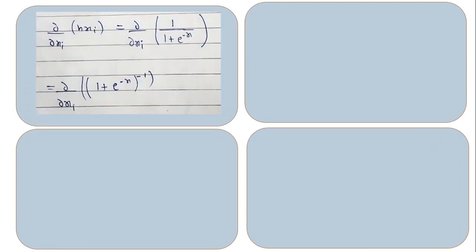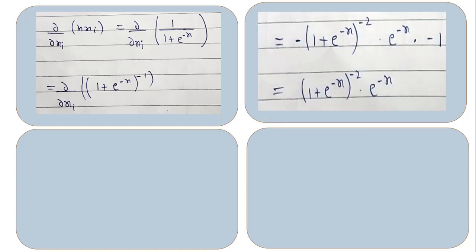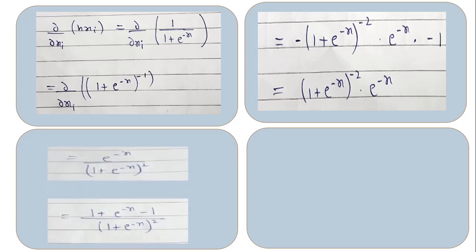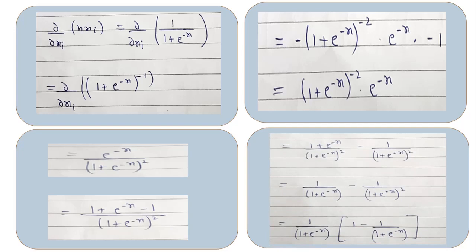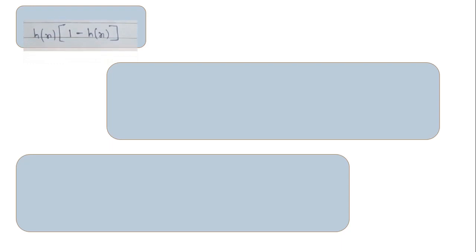Let's calculate the derivative of h(x_i) separately. Since h(x_i) is the sigmoid value 1 / (1 + e^(-x)), we apply the power rule and chain rule. This gives e^(-x) / (1 + e^(-x))². Taking (1 + e^(-x))² into the denominator and separating into two fractions by adding and subtracting 1, we identify 1 / (1 + e^(-x)) as a common factor. So we can interpret the result as h(x) * (1 - h(x)).